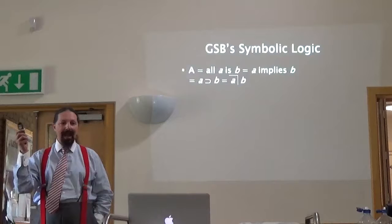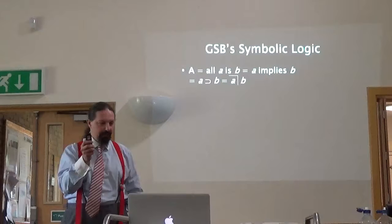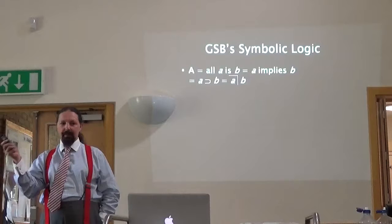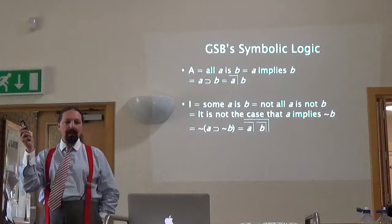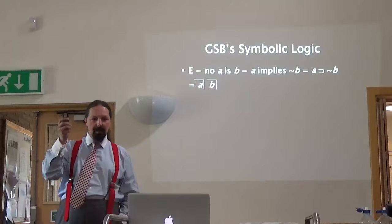Spencer Brown's approach to symbolic logic is to use variables and marks to distinguish between the four types of propositions. A propositions are notated as A with a mark over it, B — and he interprets that as all A is B, and A implies B. I propositions — some A is B — are also interpreted as: it is not the case that A implies not B.